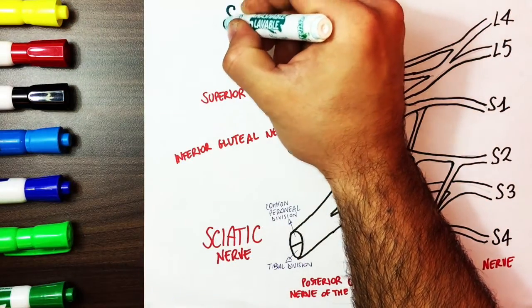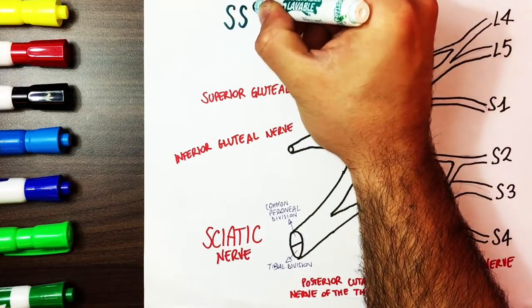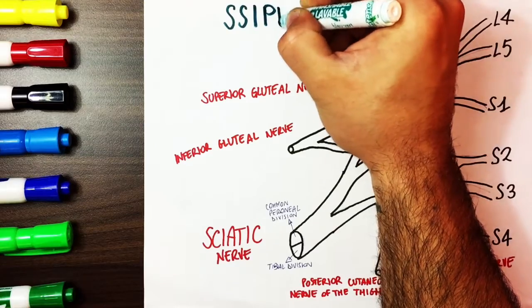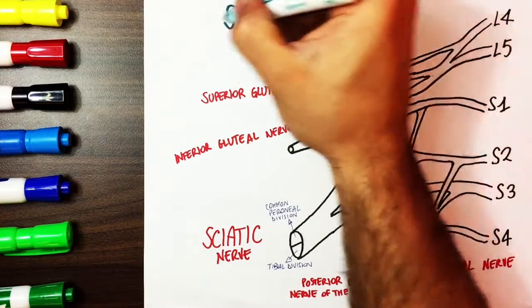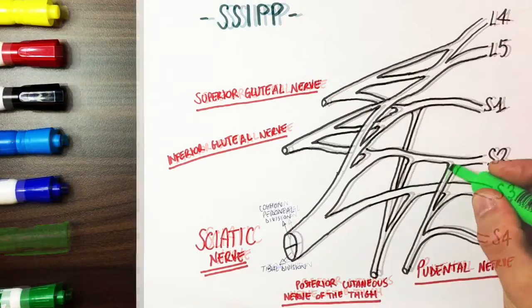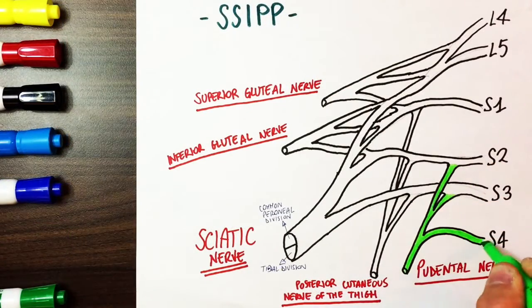A way to remember these five nerves is the acronym SSIPP which is composed by the initials of all nerves: sciatic, superior gluteal, inferior gluteal, posterior cutaneous and pudendal.